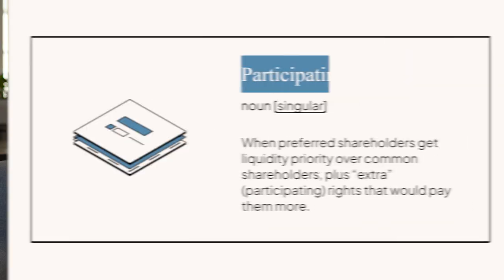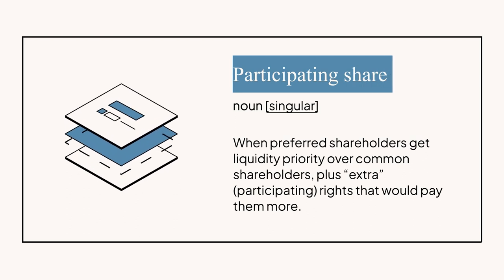Investors can also ask for what's called a participating share. This means that in addition to their normal preferred status, they also get to participate in any distributions that the common shareholders get — and there are some situations where this would give investors a better return.